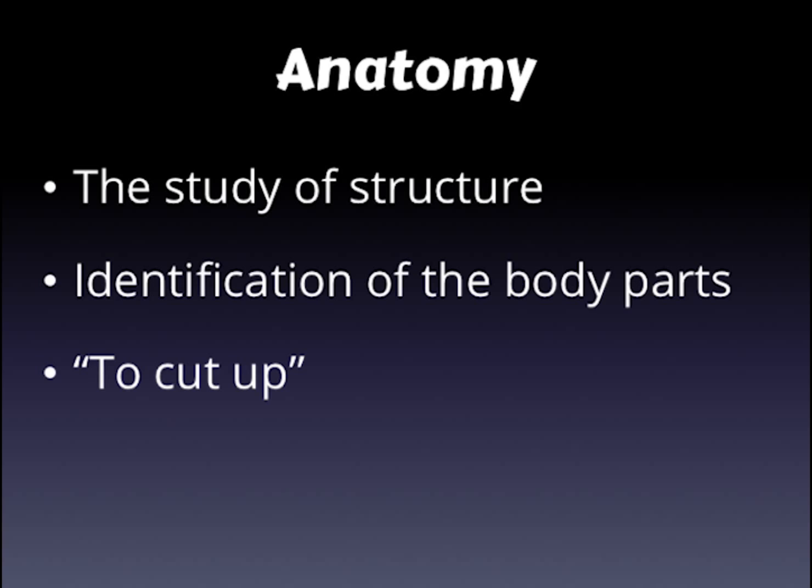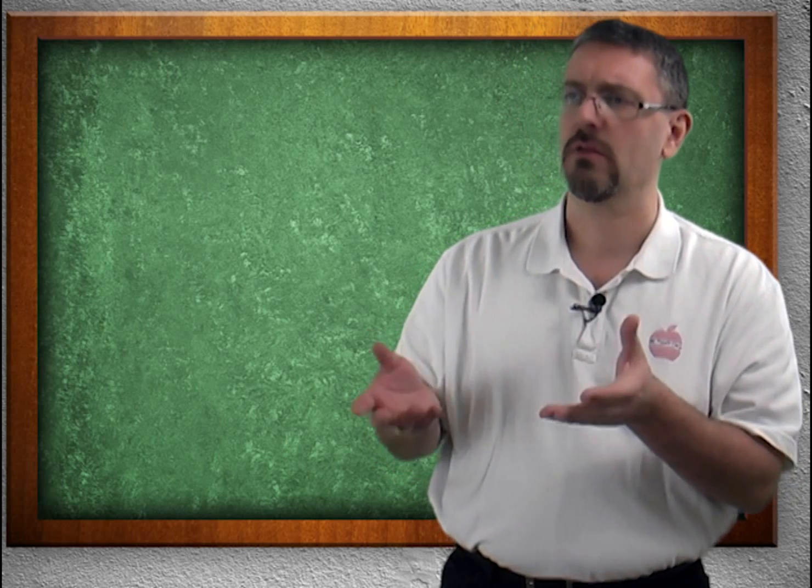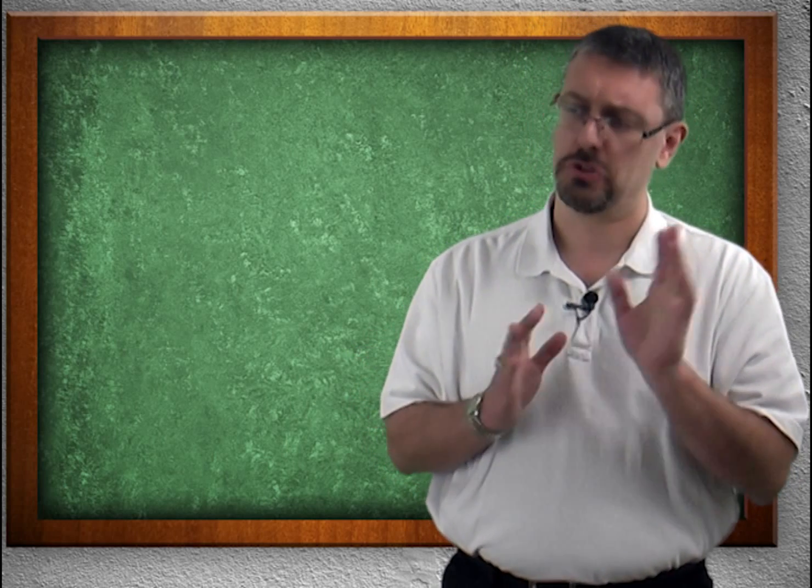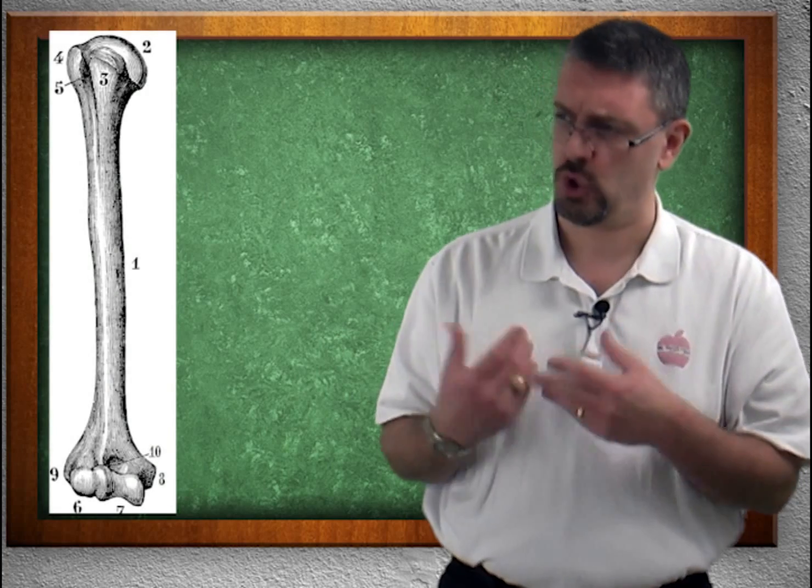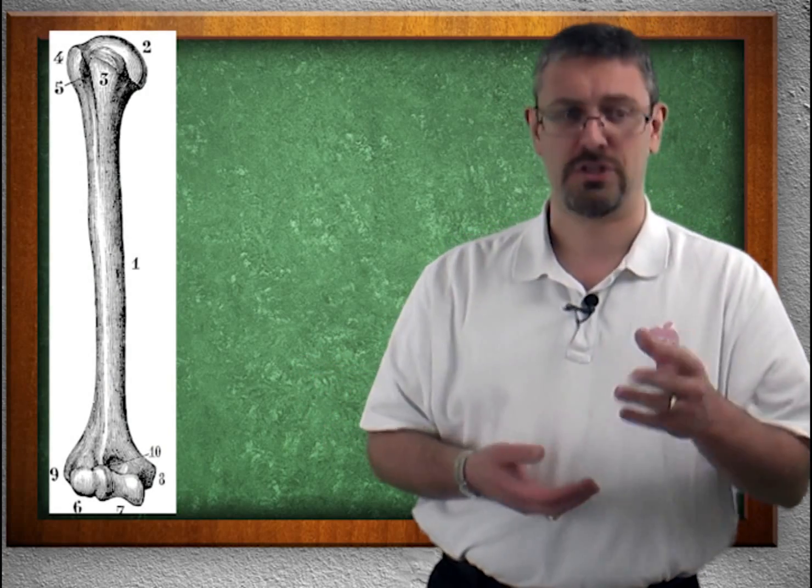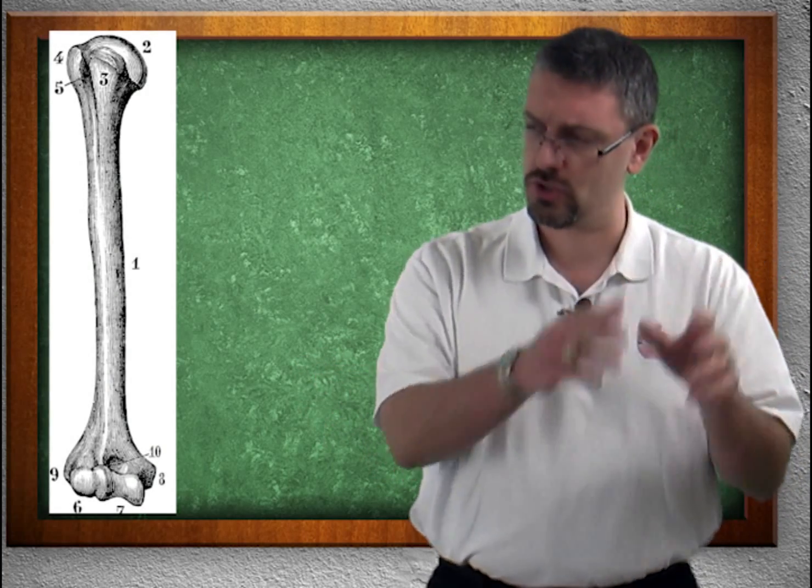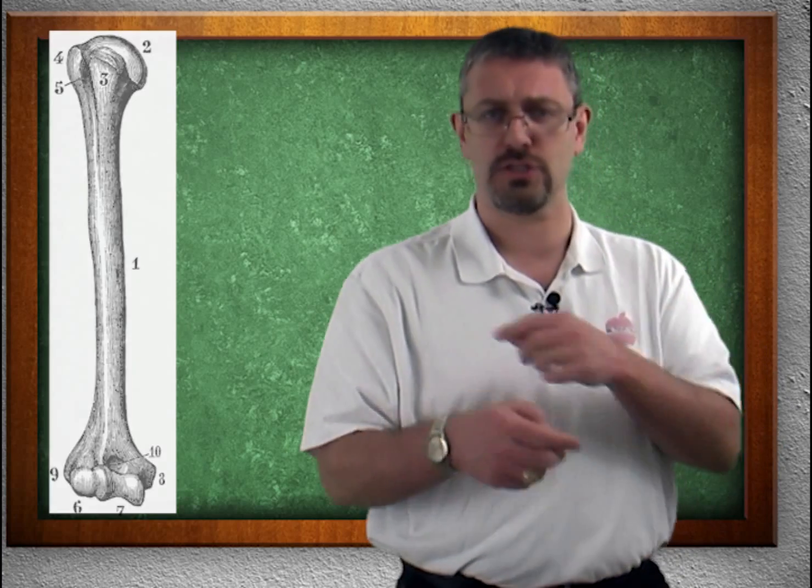The first term is anatomy. Anatomy literally comes from the word to cut up. It translates from Latin to cut up. It is the study of structure. An anatomist is looking at a bone going, hey, here's a bone. What does it do? Don't care. It's a bone. It's the humerus. The humerus is here. What does it do? I don't care. I'm an anatomist. That's a humerus. It's here.